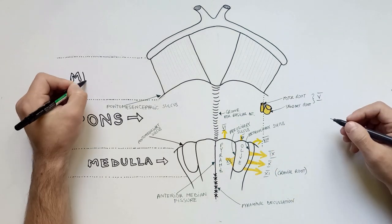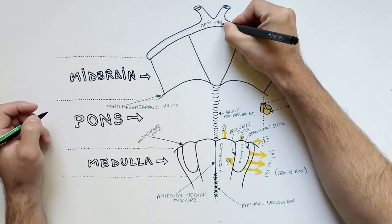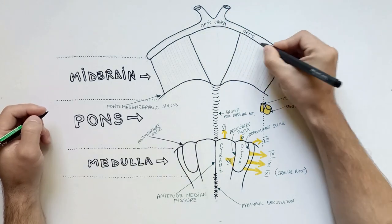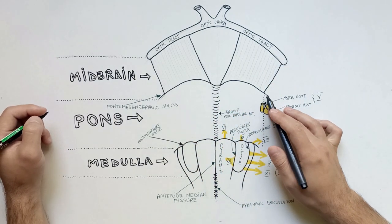The top part of the brainstem is the midbrain. The midbrain is bounded superiorly by the optic chiasm and optic tracts, and inferiorly is bounded by the pontomesencephalic sulcus.